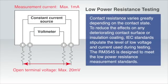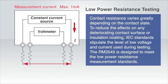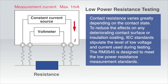The contact resistance of components used for signal contact varies greatly depending on the contact state. Because of this, the level of low voltage and current used for testing is stipulated by IEC standards so as to reduce the effects on any deteriorating contact surface or insulation coating. The RM3545 is designed to meet these low power resistance measurement standards.